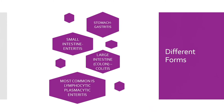The different forms of IBD are named by location. If the main inflammation is in the stomach, it's called gastritis. If it occurs in the small intestine, it's called enteritis. If it occurs in the large intestine or colon, it's called colitis. The most common type is lymphocytic-plasmacytic enteritis, which occurs in the small intestine and involves lymphocytes and plasma cells as the main inflammatory cells.